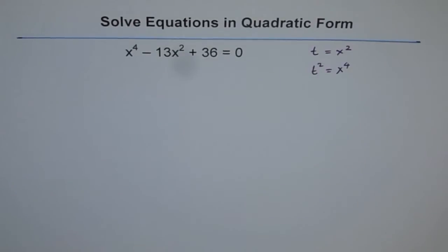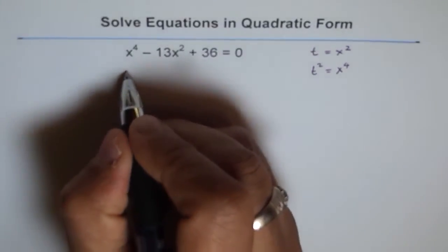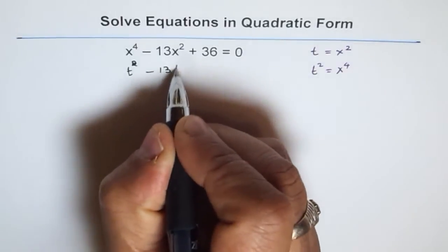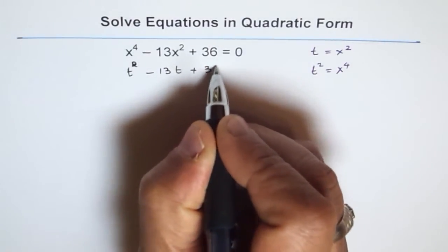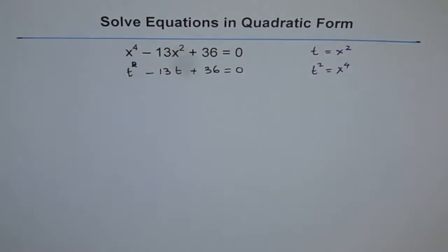So let's do that. Let me do that here. t squared as t to the power of 4. So t squared minus 13t plus 36 equals 0. Now clearly this is a quadratic equation.